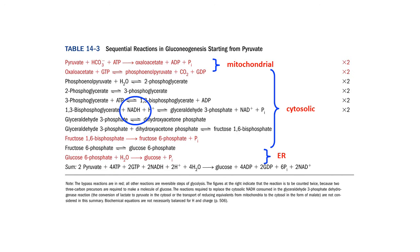Bypass 1 occurs at the mitochondria, bypass 2 at the cytosol, and bypass 3 at the endoplasmic reticulum. These tables also show that gluconeogenesis requires high energy.